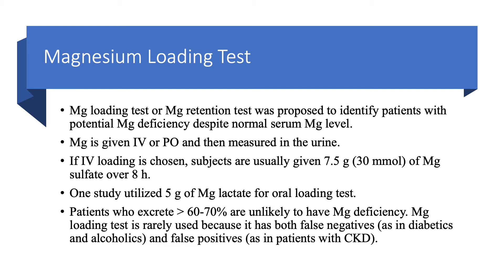The magnesium loading test, or magnesium retention test, is worth mentioning for completeness, though it is essentially never used outside of research. It was proposed to identify patients with normal serum magnesium who are still suspected of having hypomagnesemia. You load the patient with intravenous magnesium — such as 7.5 grams over 8 hours, about four times the usual 2-gram dose — or 5 grams of oral magnesium lactate. If the patient excretes more than 60 to 70 percent, they probably don't have magnesium deficiency. It's rarely used because of false negatives in diabetics and alcoholics and false positives in patients with CKD.